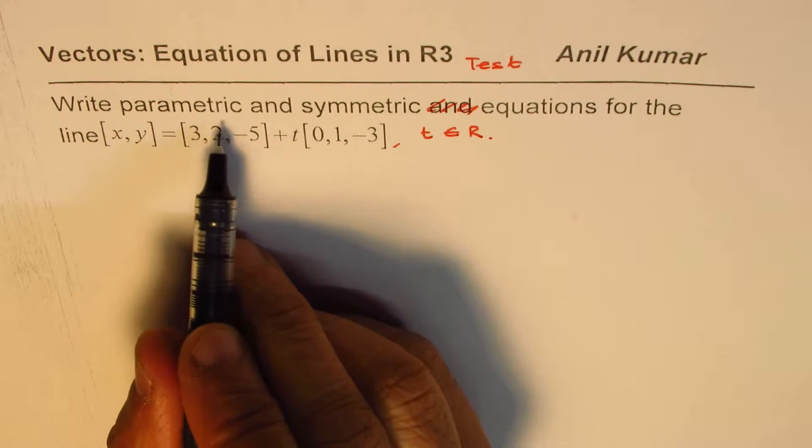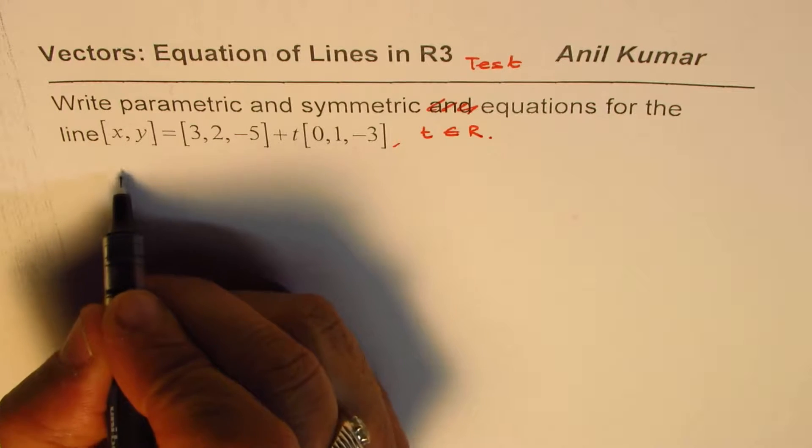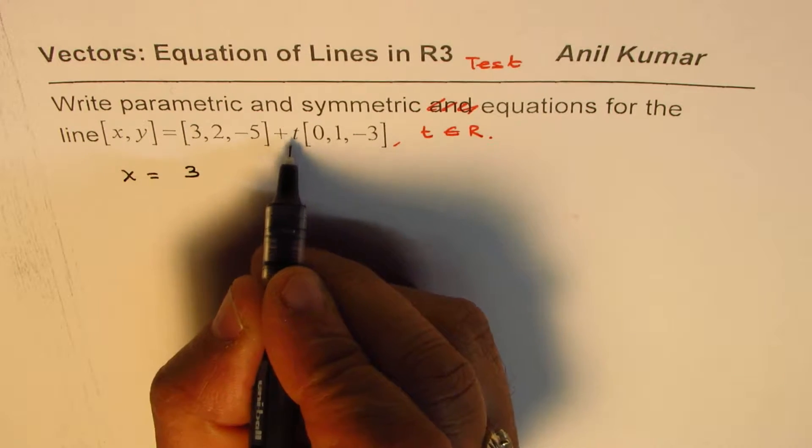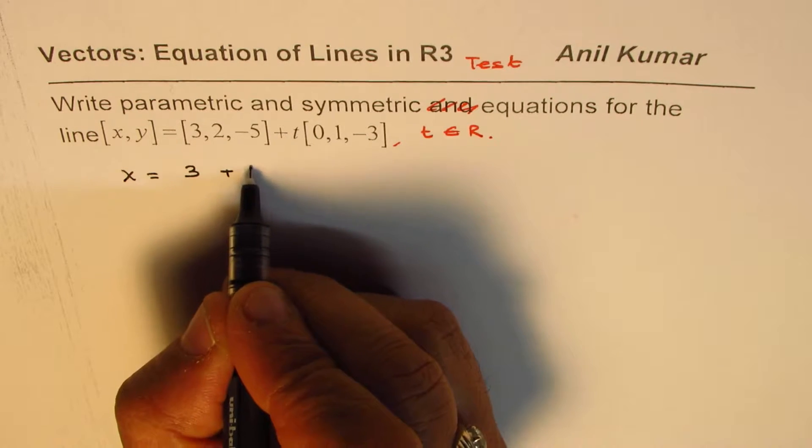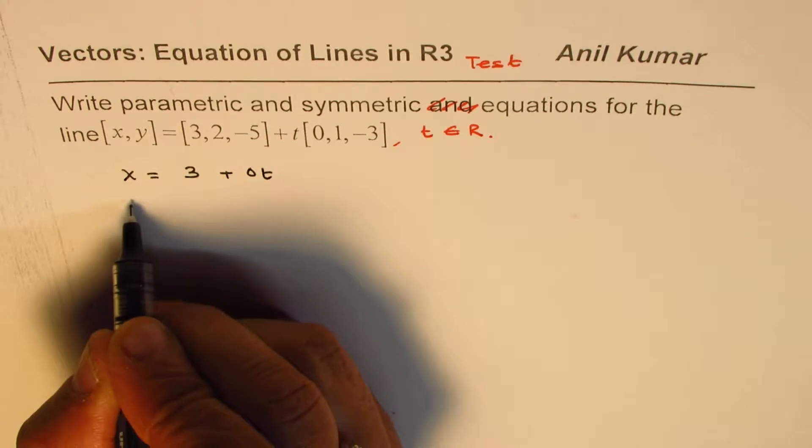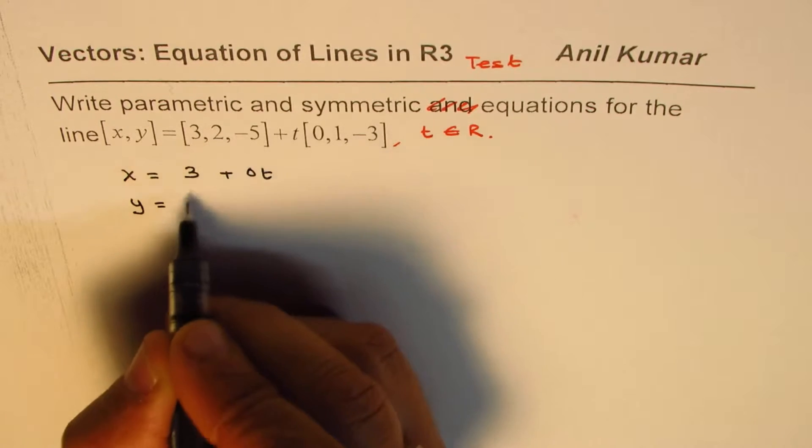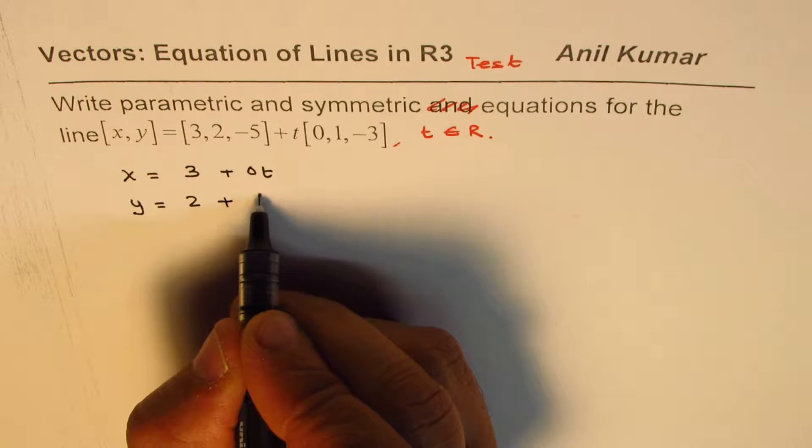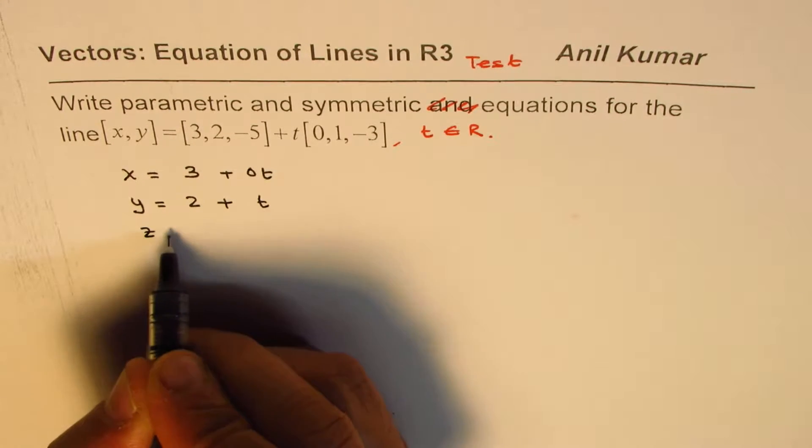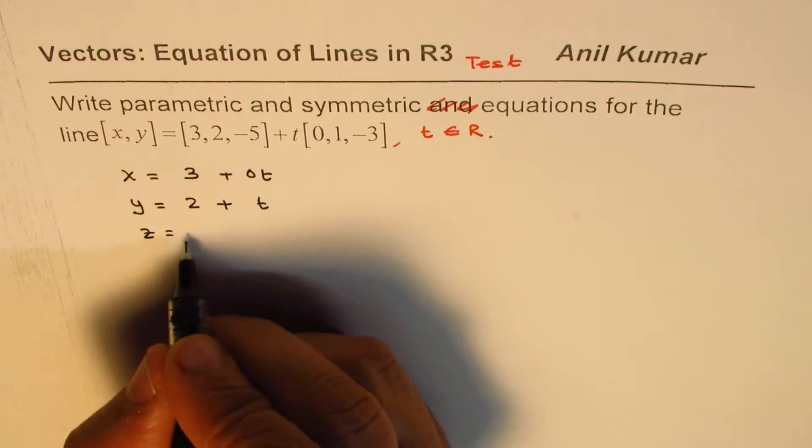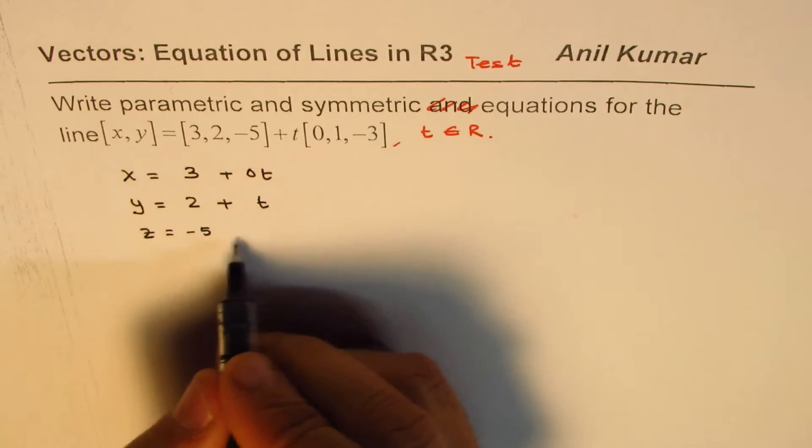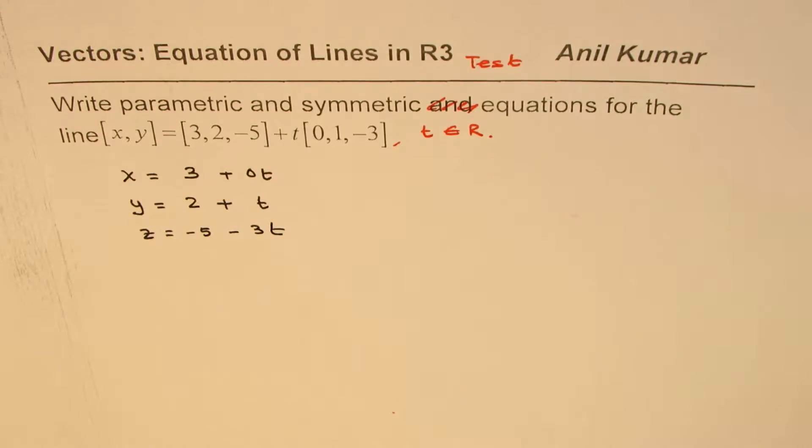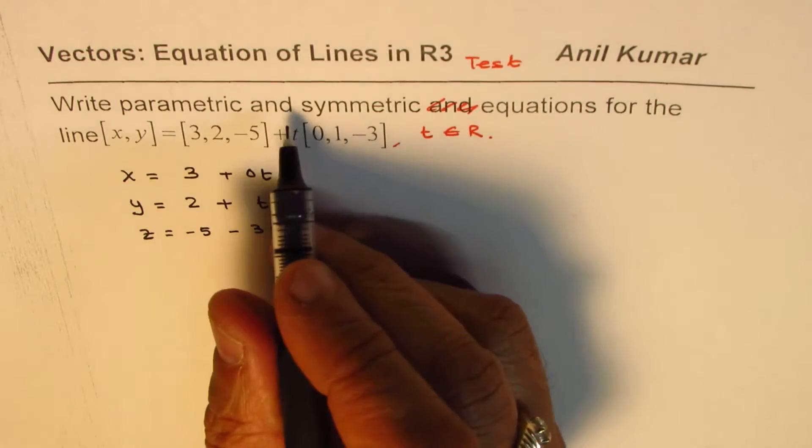Well, to write the parametric form, we can write this as x equals 3 plus 0t, and then y equals 2 plus 1t, which is t, and z equals -5 minus 3t.